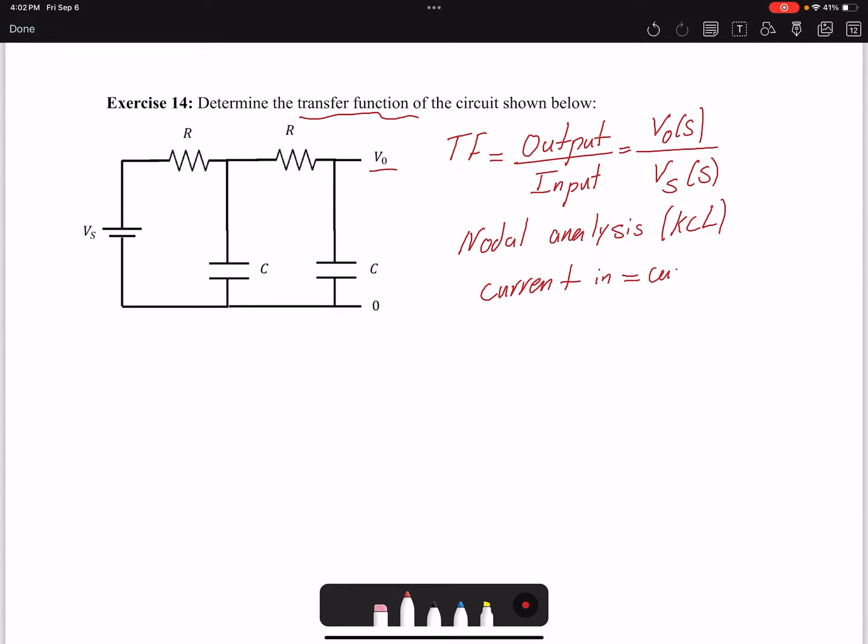We need to select our nodes so we'll be able to implement this law. This is one of the nodes that we select, call it node 1, and this is node 2.